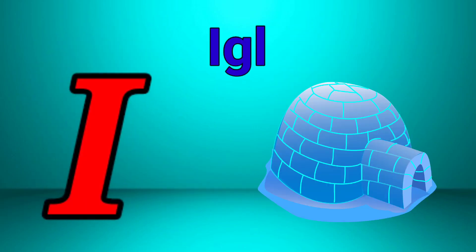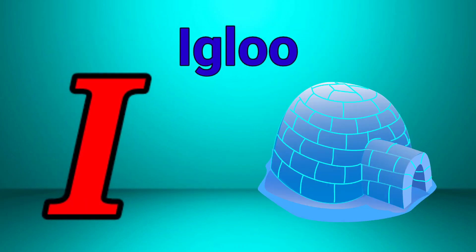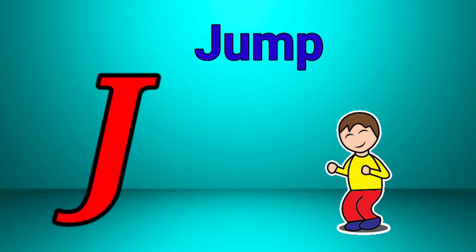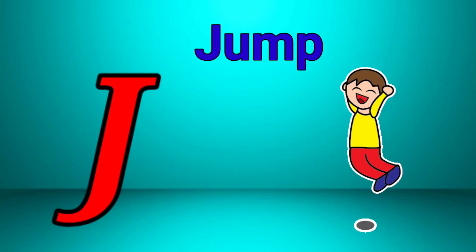I is for igloo, i-i-igloo. J is for jump, j-j-jump.